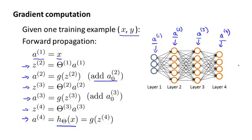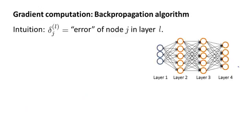Next, in order to compute the derivatives, we're going to use an algorithm called backpropagation. The intuition of the backpropagation algorithm is that for each node, we're going to compute the term delta superscript l, subscript j, that's going to somehow represent the error of node j in layer l. Recall that a superscript l, subscript j is the activation of the j-th unit in layer l. And so this delta term is in some sense going to capture our error in the activation of that node, or how we might wish the activation of that node was slightly different.